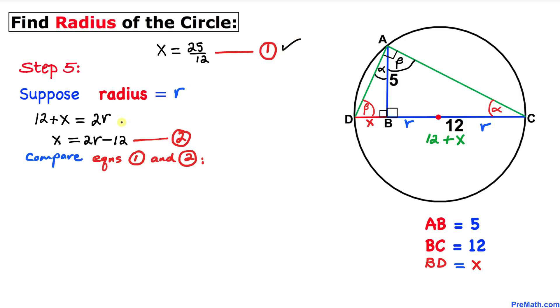Compare these two equations, equation 1 and equation 2. Since the left hand sides are the same, I can equate the right hand sides as well. So I can write 2r minus 12 equals 25 over 12. Solve for r. I'm going to put 1 underneath to make it a fraction. Cross multiply, so we get 24r minus 144 equals 25.